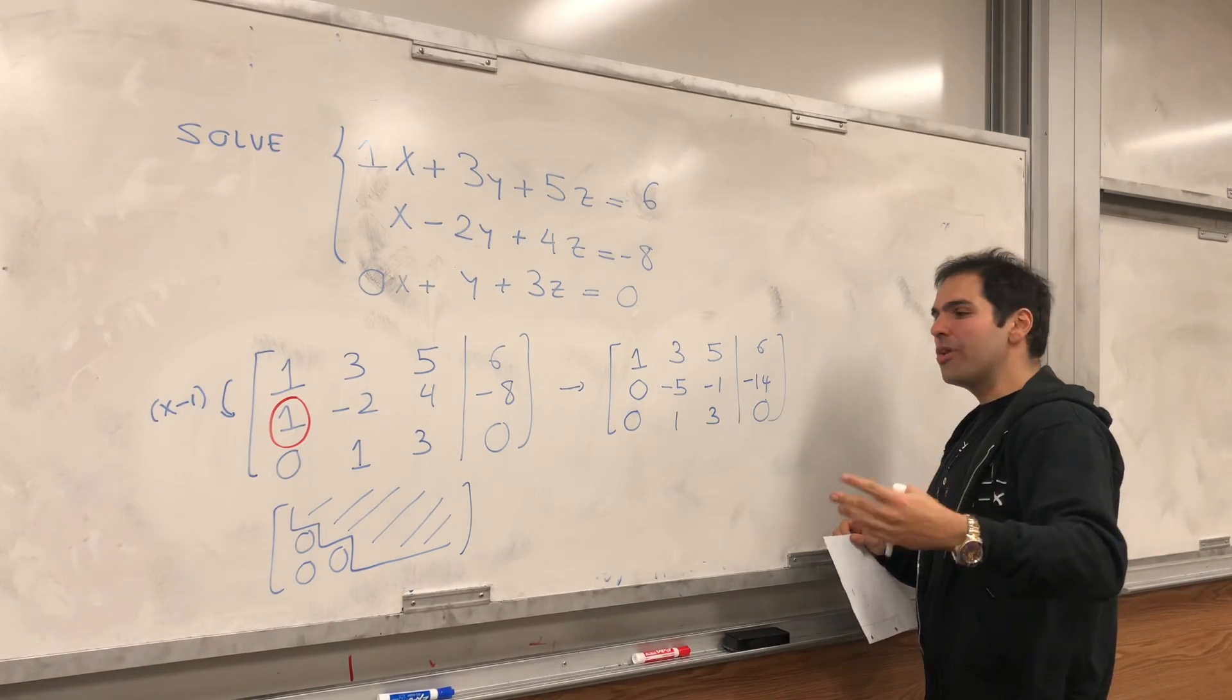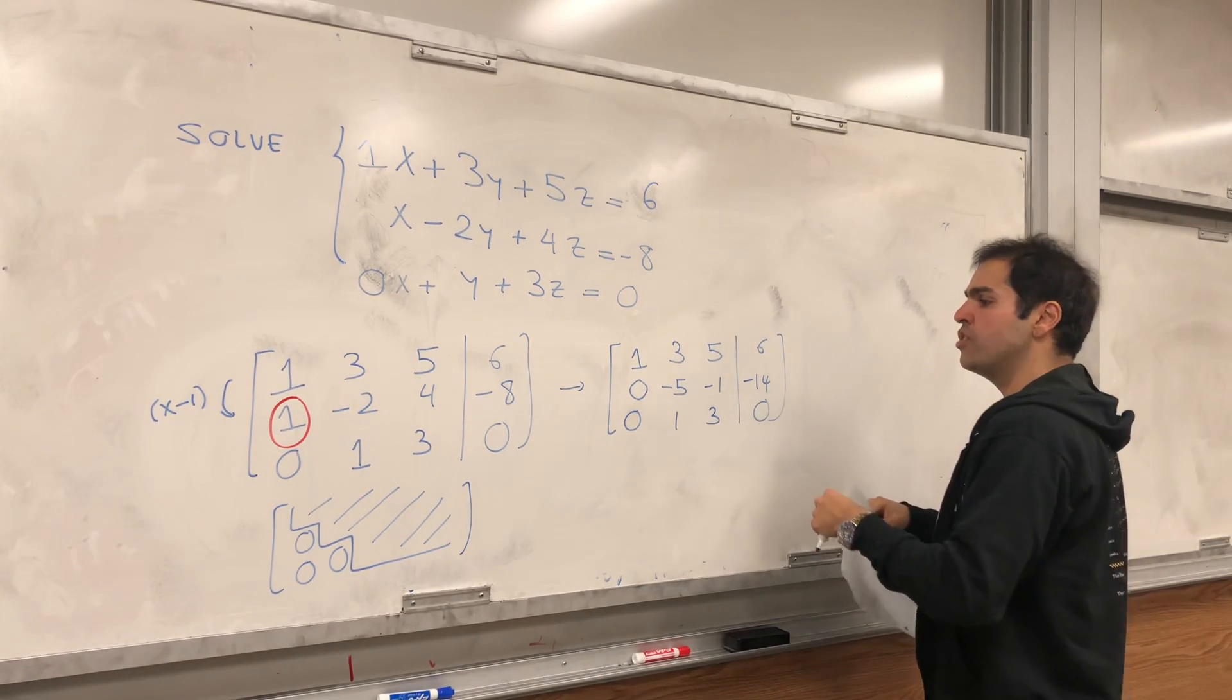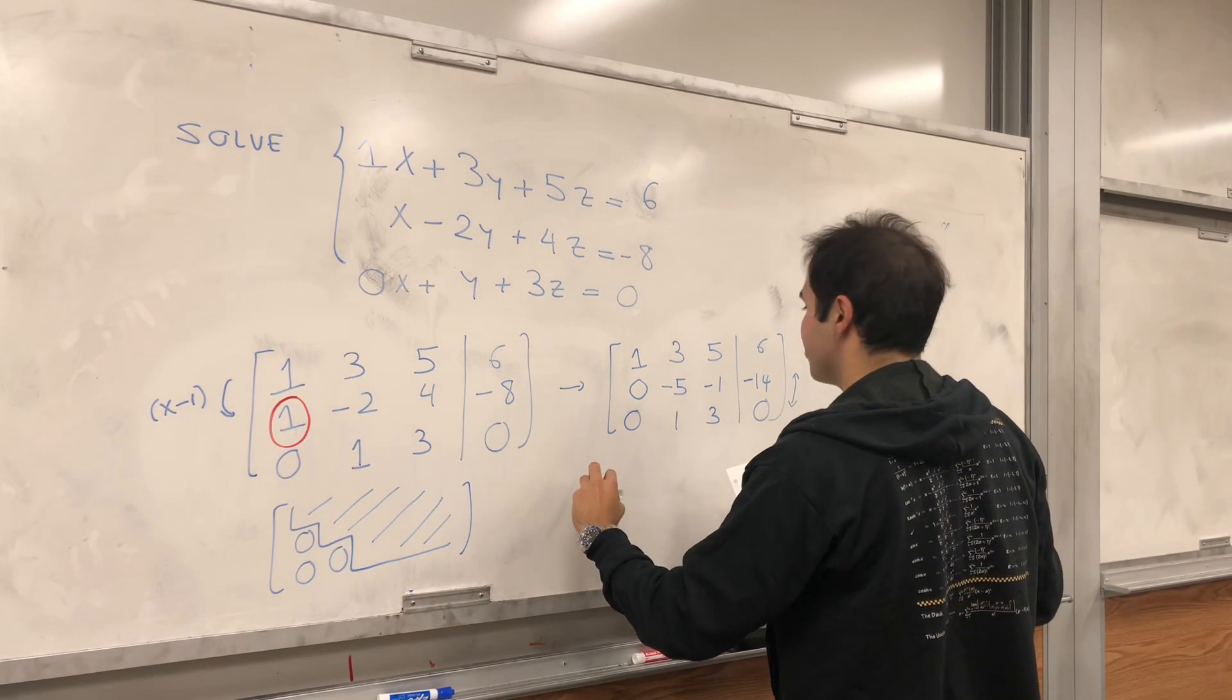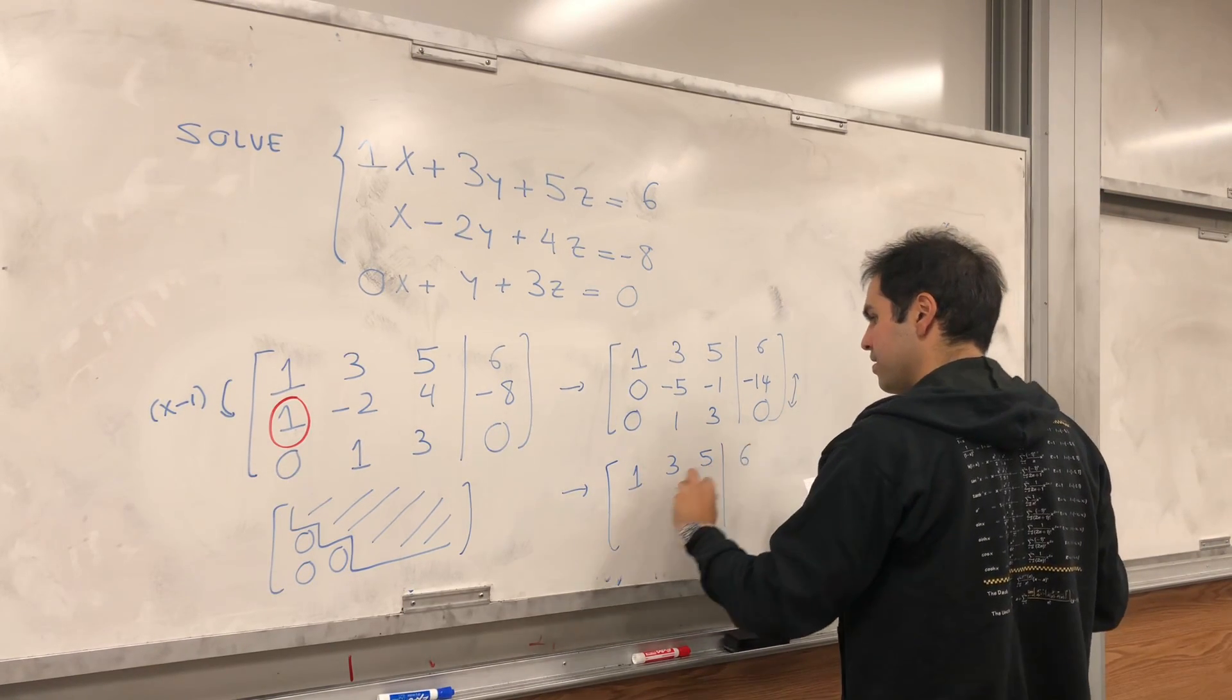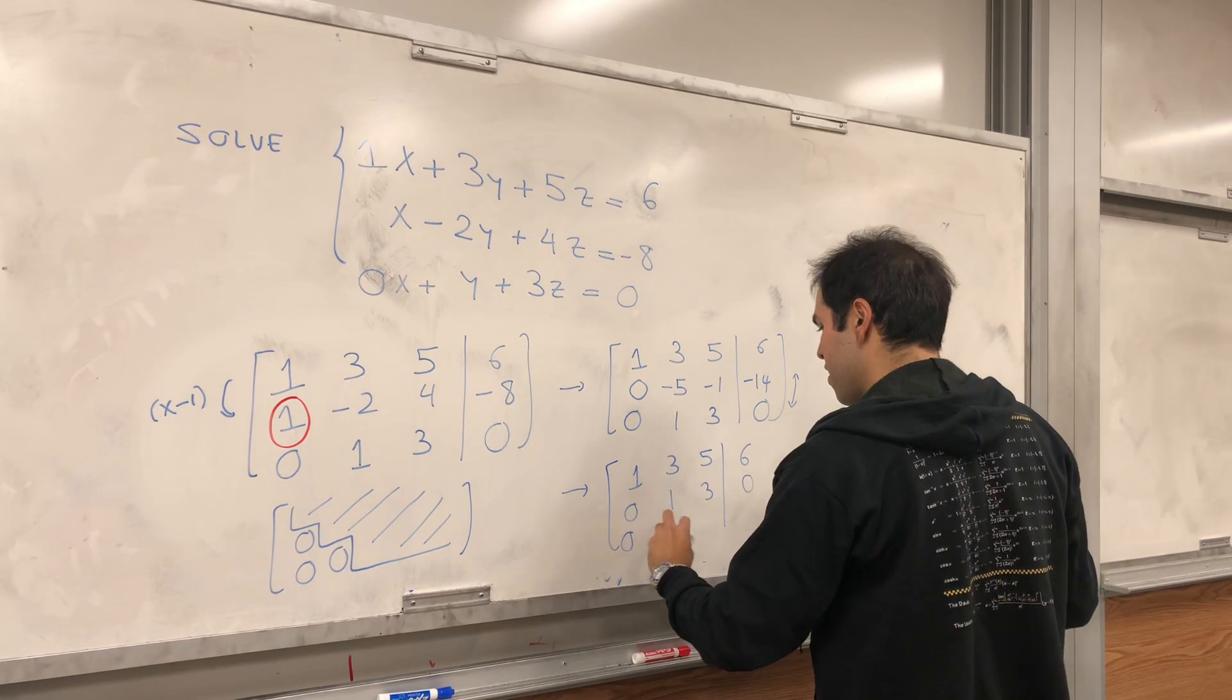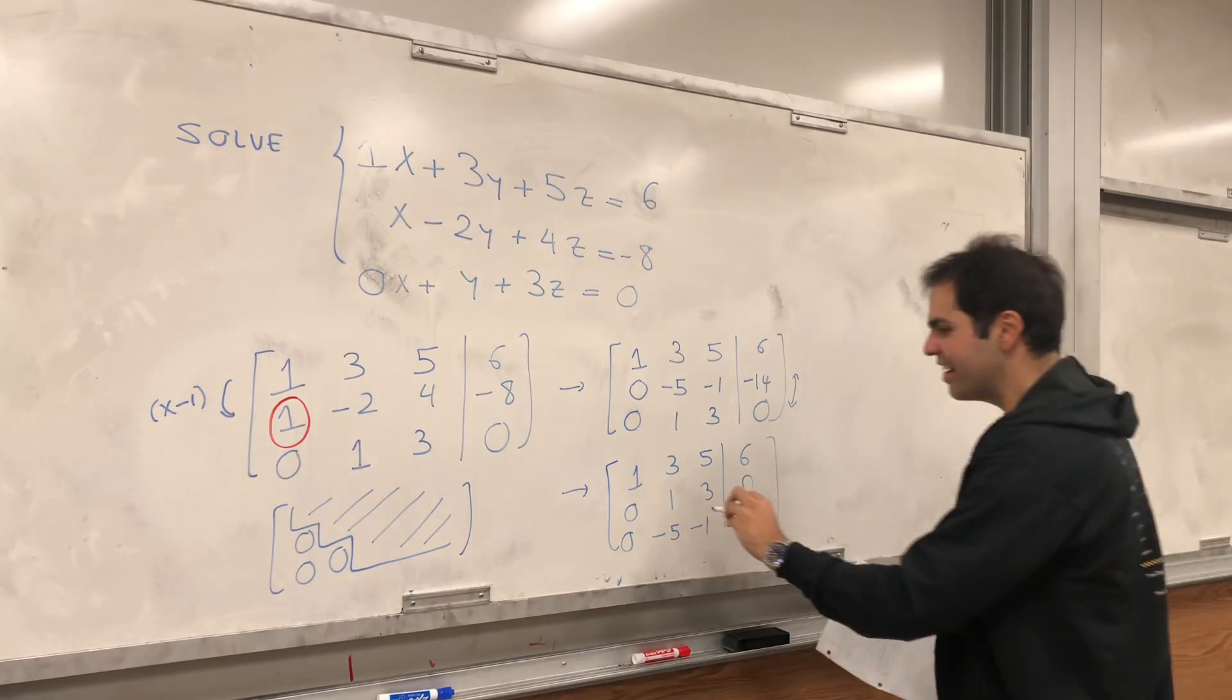Now, for reasons that become apparent in a second, it's good to have 1s on top. And so, now let's just interchange those two rows, which illustrates the process of interchanging. So, 1, 3, 5, 6. 0, 1, 3, 0. And then 0, minus 5, minus 1, minus 40. Okay, good.